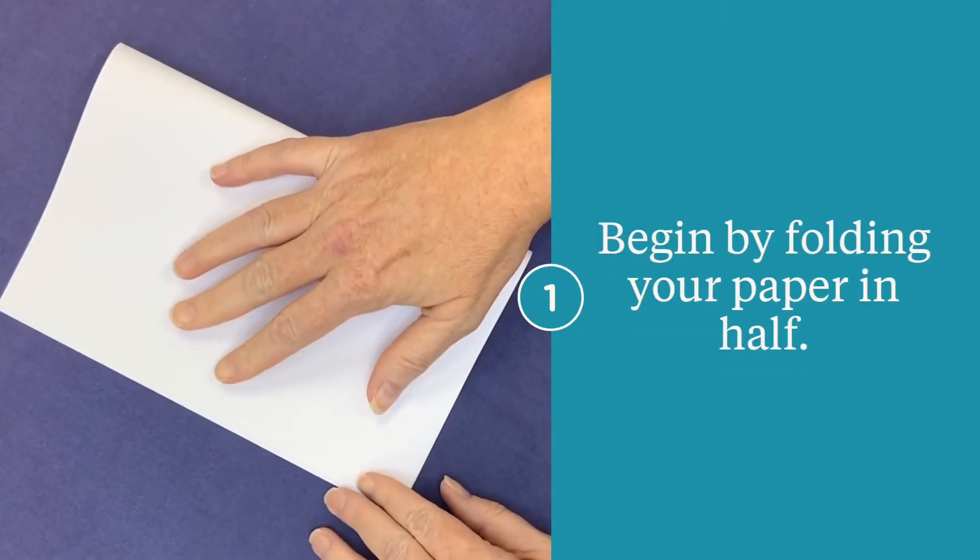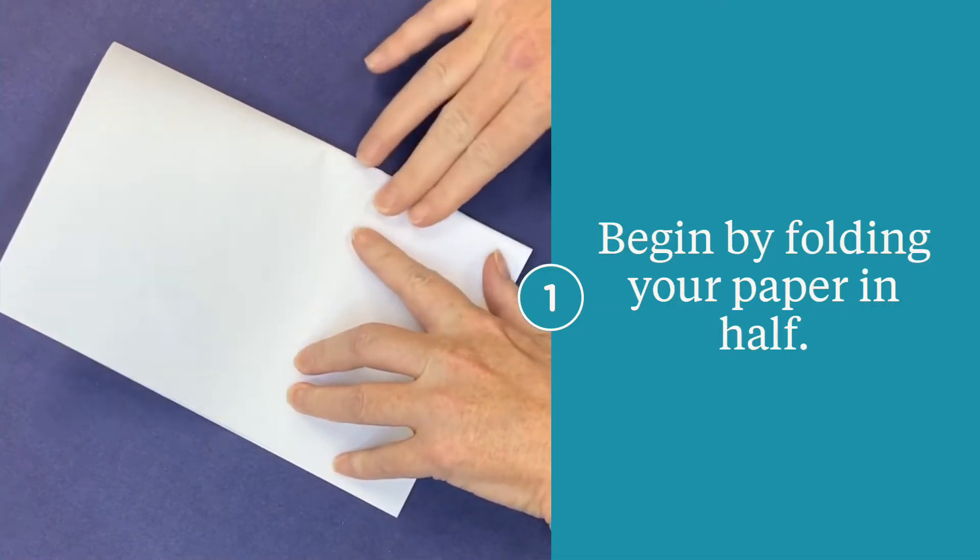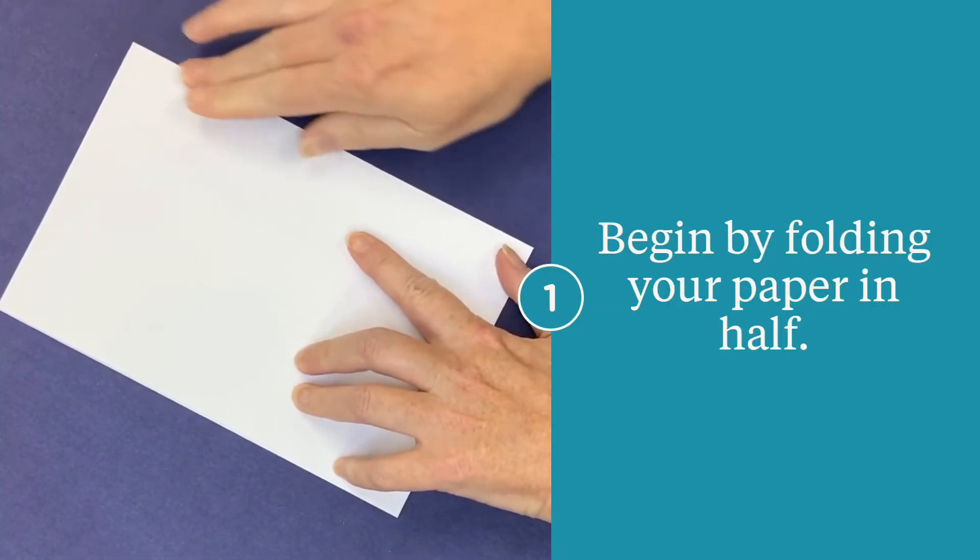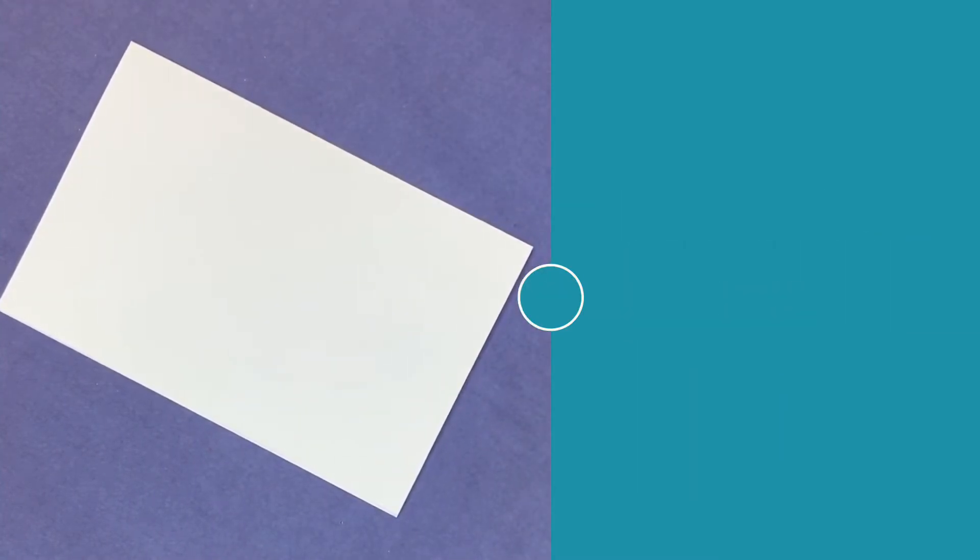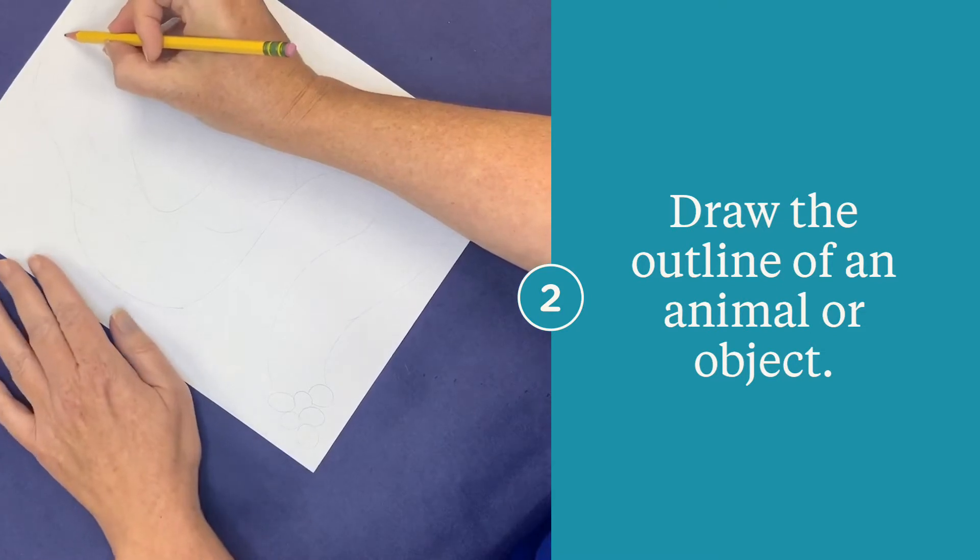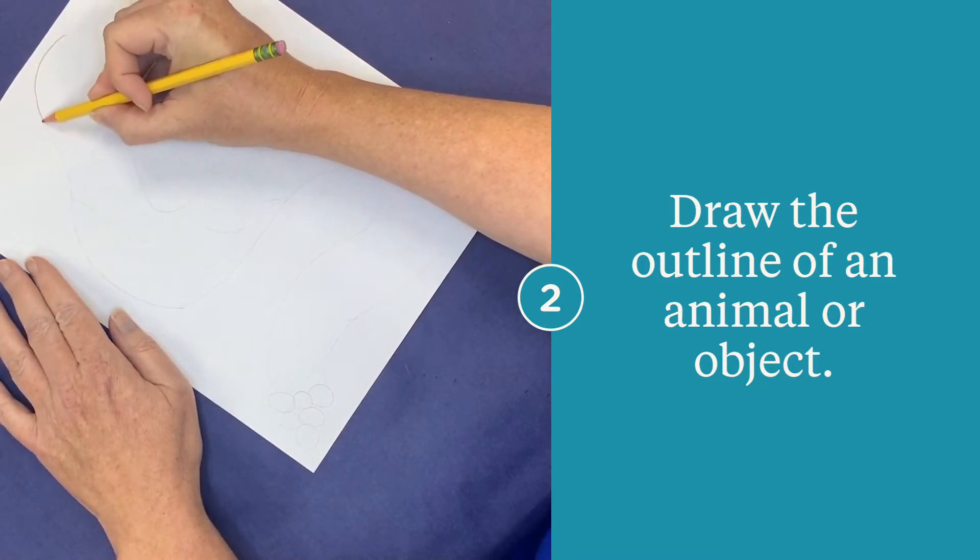If you are up to the challenge of zentangle, you can just use your whole sheet of paper. If you are a person who is not very patient, fold your paper in half. Draw the outline of an animal or an object.